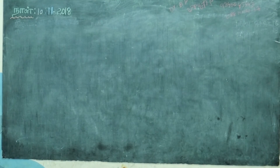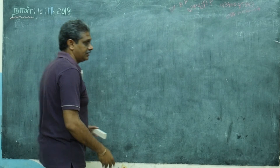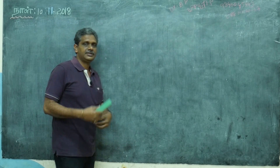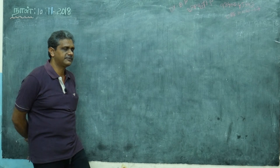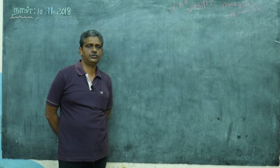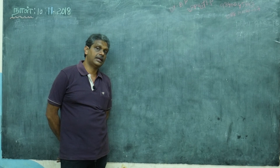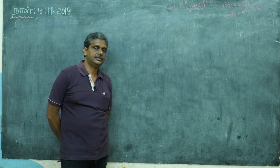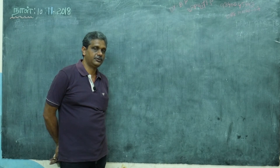Hi friends, this is your Dr. BP alias Dr. Bapuji Pillepu. Last class we discussed first order non-linear PDE, two types: first type is where the function contains only P and Q; second type, the Clairaut form, is z equals Px plus Qy plus f of P, Q.